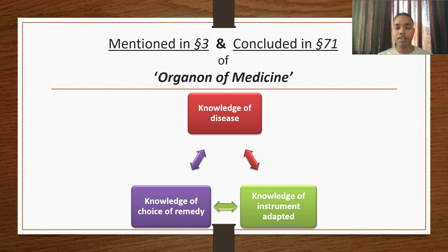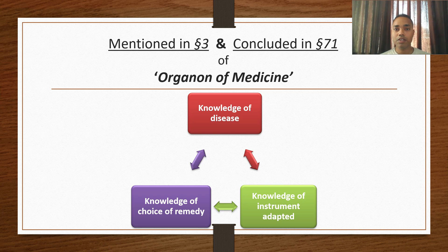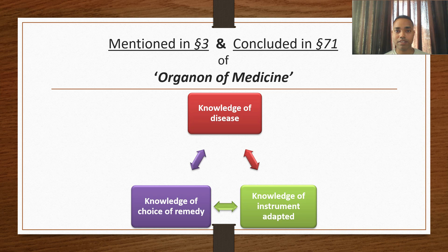The second point is knowledge of choice of remedy — meaning you must have the right knowledge of the right way of case taking, and how to choose a remedy. The third point is knowledge of instrument adopted — meaning what method you are using for the selection of remedy, the right way of choosing or selecting a remedy, with the help of knowledge of the Organon of Medicine, as guided and taught by Dr. Samuel Hahnemann.